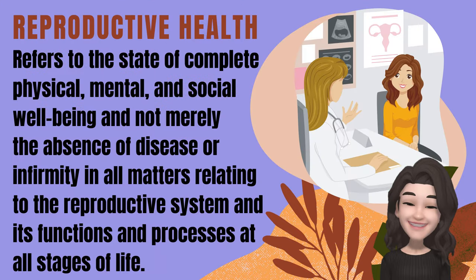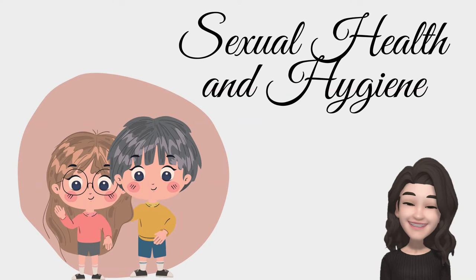The fourth term is reproductive health. It refers to the state of complete physical, mental, and social well-being, and not merely the absence of disease or infirmity, in all matters relating to the reproductive system and its functions and processes at all stages of life. It suggests that people with adequate reproductive health have a satisfying and safe sexual life, can have children, and can make a choice as to whether they would like to have children and when and how to have them. Now let's start with a proper discussion.